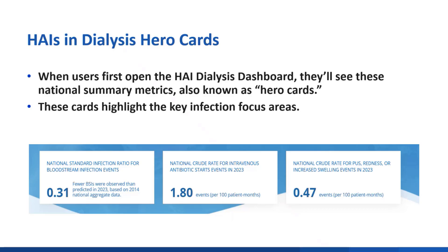For bloodstream infections, or BSIs, we report the Standardized Infection Ratio, or SIR. The SIR is NHSN's primary summary measure for evaluating and reporting dialysis bloodstream infections. It can be used to track infections at the national, state, local, or facility level. The most basic explanation of the SIR is it's the ratio of the predicted number of events to the observed number of events. The predicted number is calculated based on nationally aggregated data across several vascular access types. A SIR of precisely one is where the expected number of events equals the predicted number of events. A SIR greater than one occurs when the observed events is greater than the predicted events, and a SIR between zero and one occurs when the observed events are less than predicted.